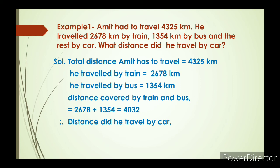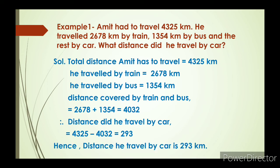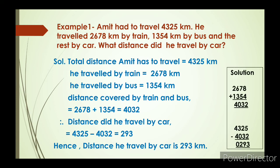To find the distance he travelled by car, we subtract 4032 from the total distance 4325. After subtraction we get 293. Hence the distance he travelled by car is 293 km. We added 2678 and 1354 to get 4032, then computed 4325 minus 4032 equals 293.